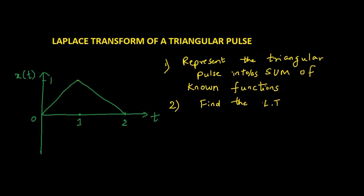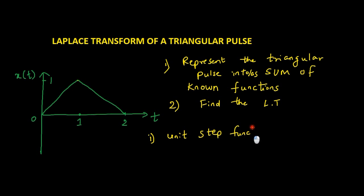As you can see there is a triangular pulse. To find the Laplace transform of a triangular pulse there are two steps. First, represent the triangular pulse as a sum of known functions, and then find the Laplace transform. We are familiar with the unit step function and also with the ramp function.